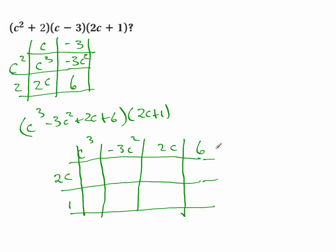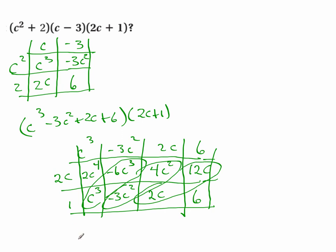So 2c and 1. Alright, so I've got my box here. This is 2c⁴ + c³ - 6c³ - 3c², 4c², 2c, 12c, and 6. So the diagonals are going to add. 2c⁴ - 5c³ - 2c² + 14c + 6.